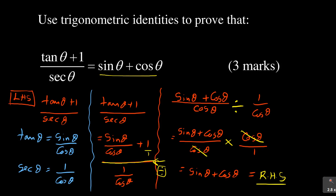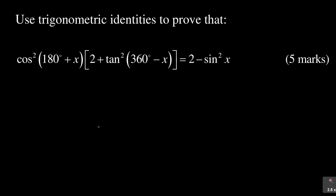This is identical to my right hand side, so I've managed to prove that the left hand side is equivalent to the right hand side. Now let me do the last question. You are proving a trig identity where the left hand side is quite long and it equals the right hand side — it's worth five marks. I'm going to work on it in parts and then pull everything together.